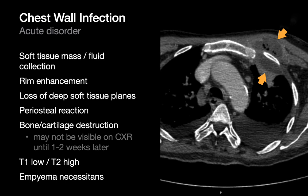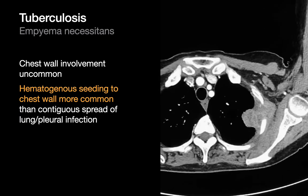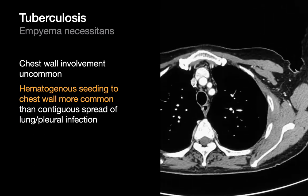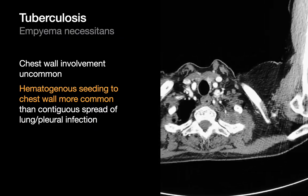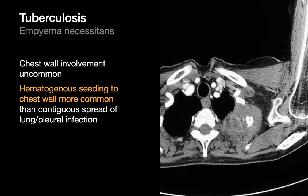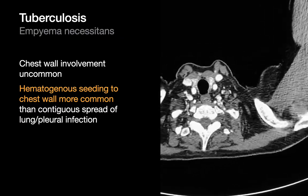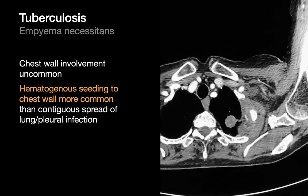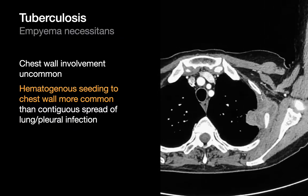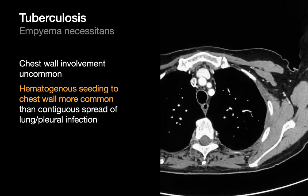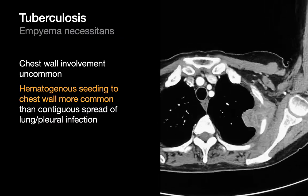We sometimes use the term empyema necessitans to describe chest wall infections caused by an empyema spreading from the pleural space into the chest wall. Empyema necessitans in tuberculosis is a relatively uncommon finding. It's actually more common for infections to reach the chest wall via the bloodstream than by direct spread from lung or pleura.